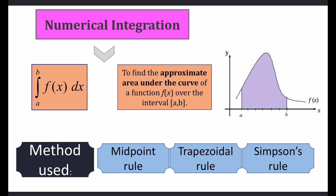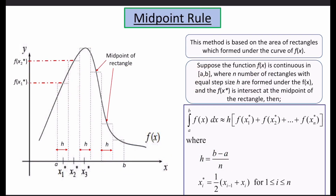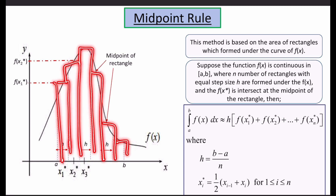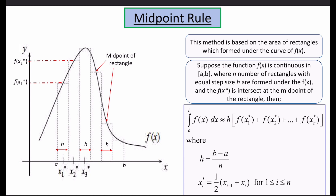The methods that will be used are the midpoint rule, trapezoidal rule, and Simpson's rule. Let's look at the midpoint rule. This method is based on the area of rectangles which form under the curve of f(x). We determine the area below the graph by using rectangles, dividing the area from a to b into equal-size rectangles.